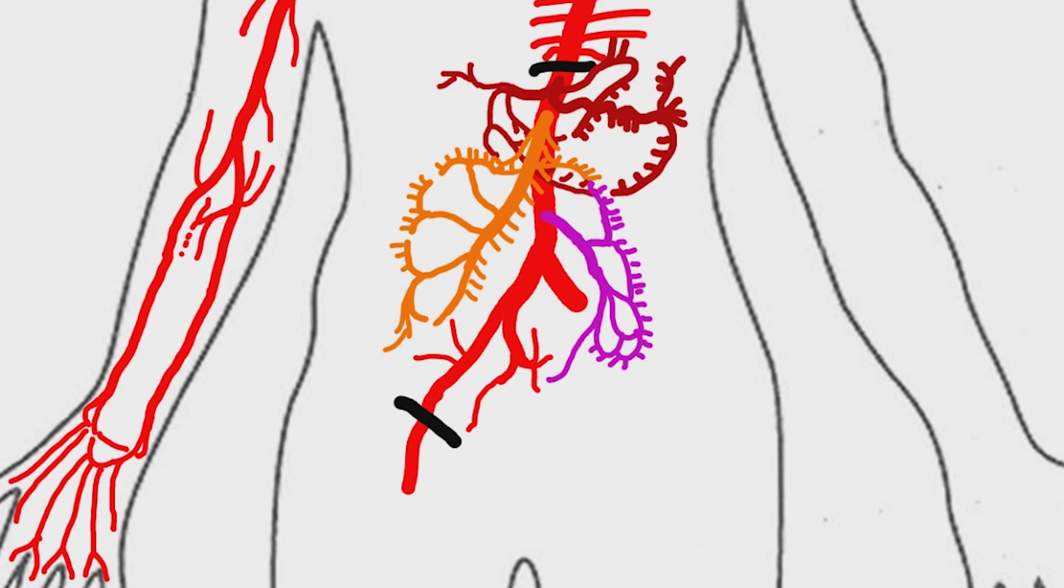Anterior division gives rise to umbilical artery, and superior vesicular artery arises from it. In some people superior vesicular artery arises as a separate branch. Other branches of anterior division are: